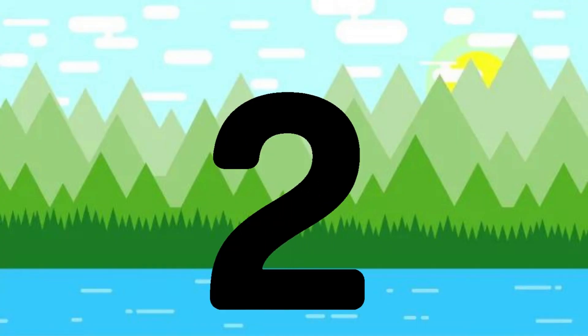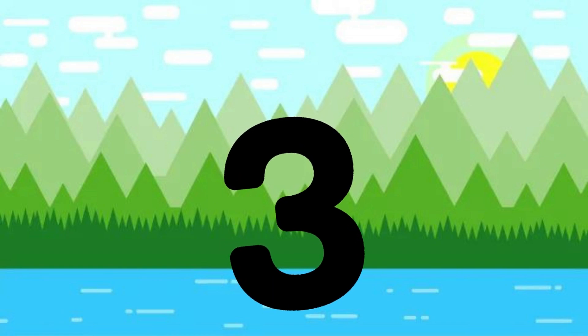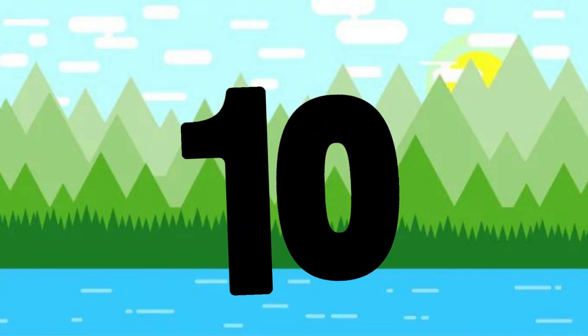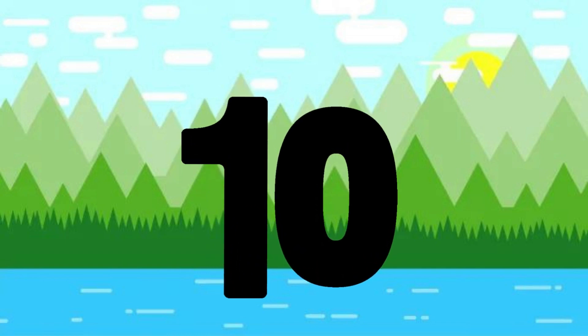One little, two little, three little numbers. Four little, five little, six little numbers. Seven little, eight little, nine little numbers. Ten little numbers.